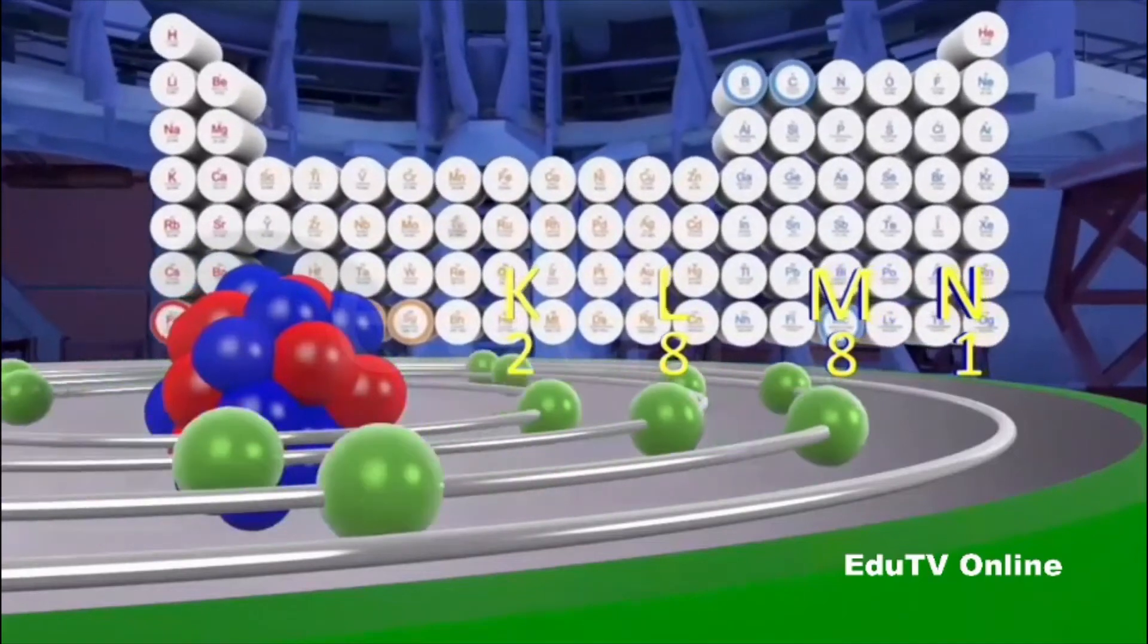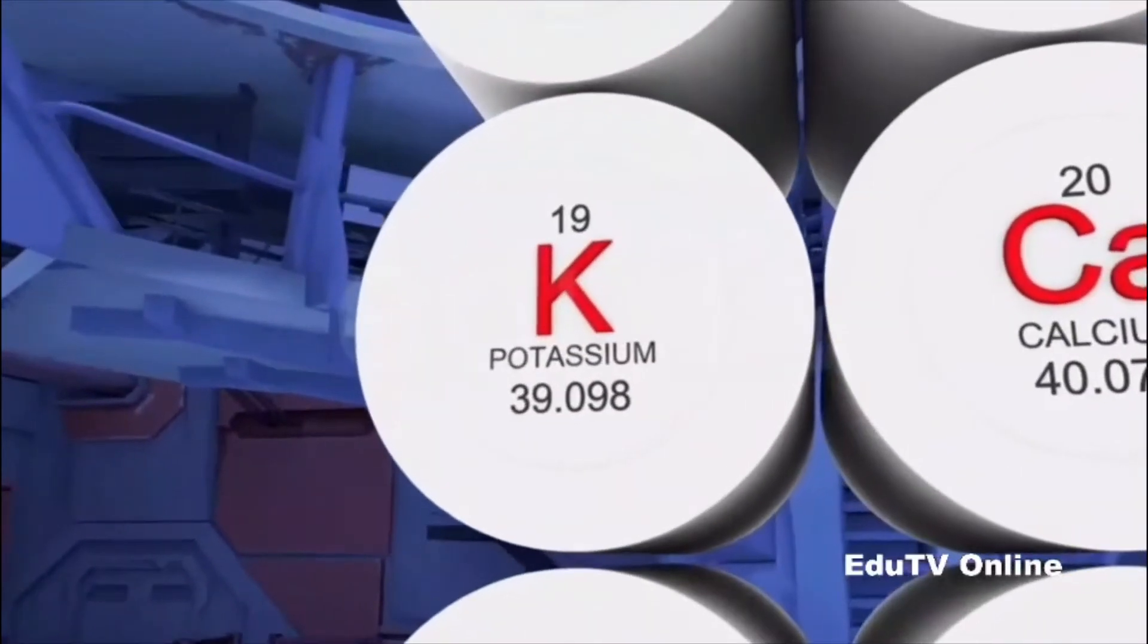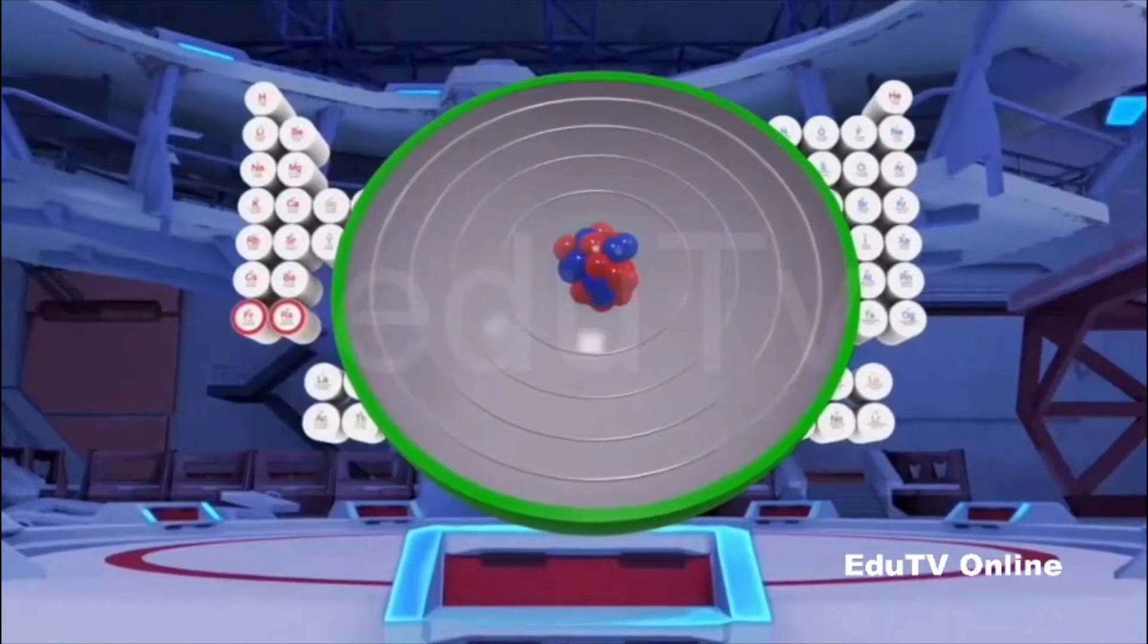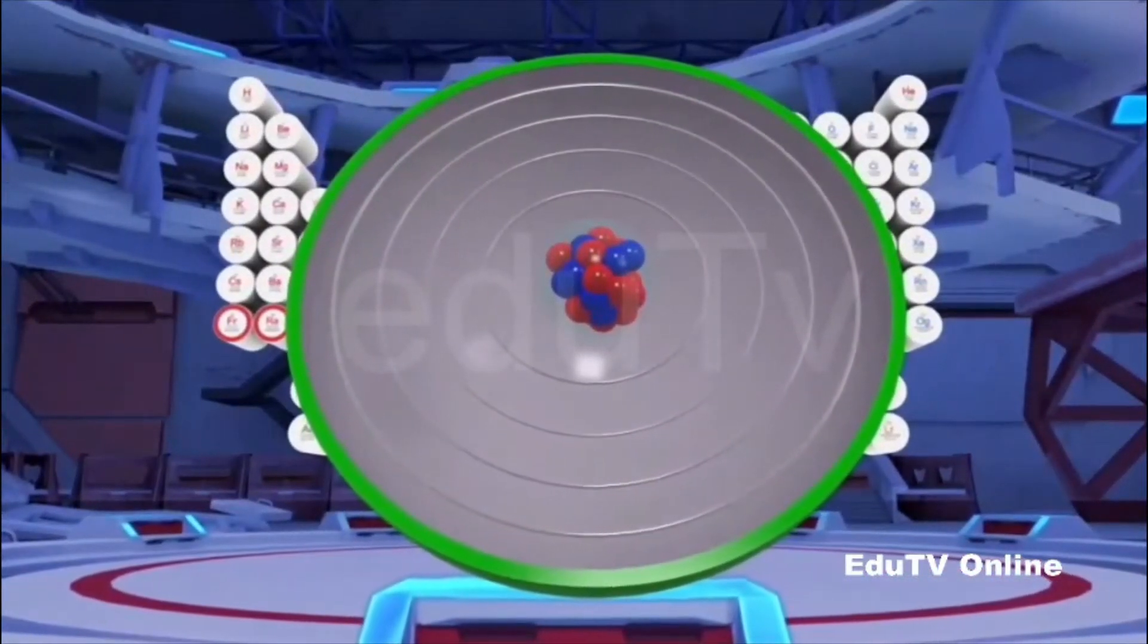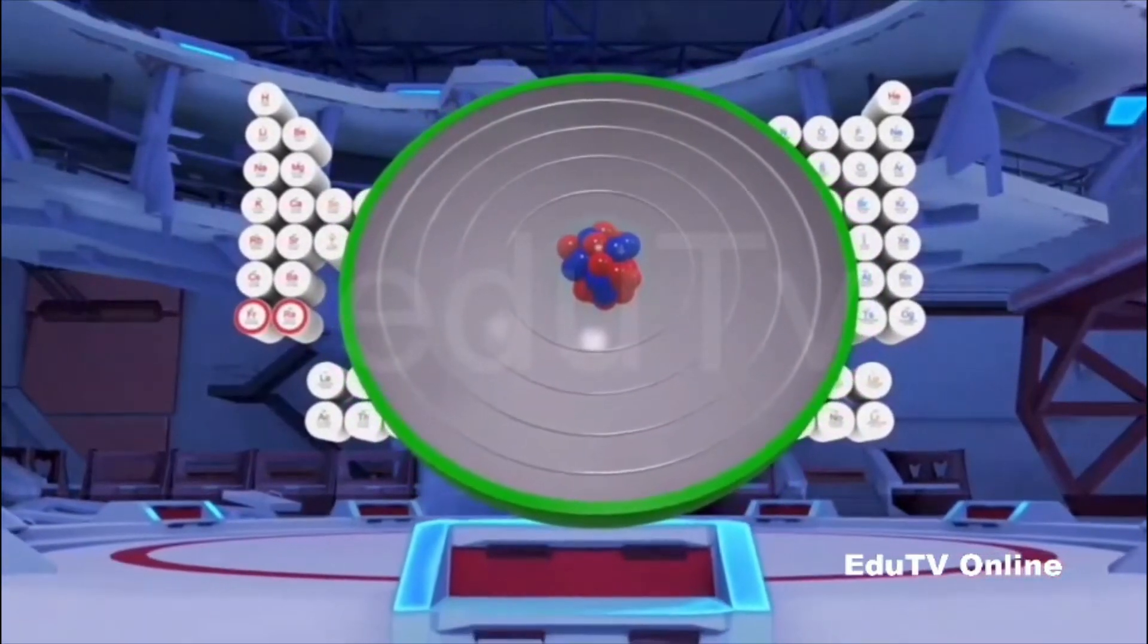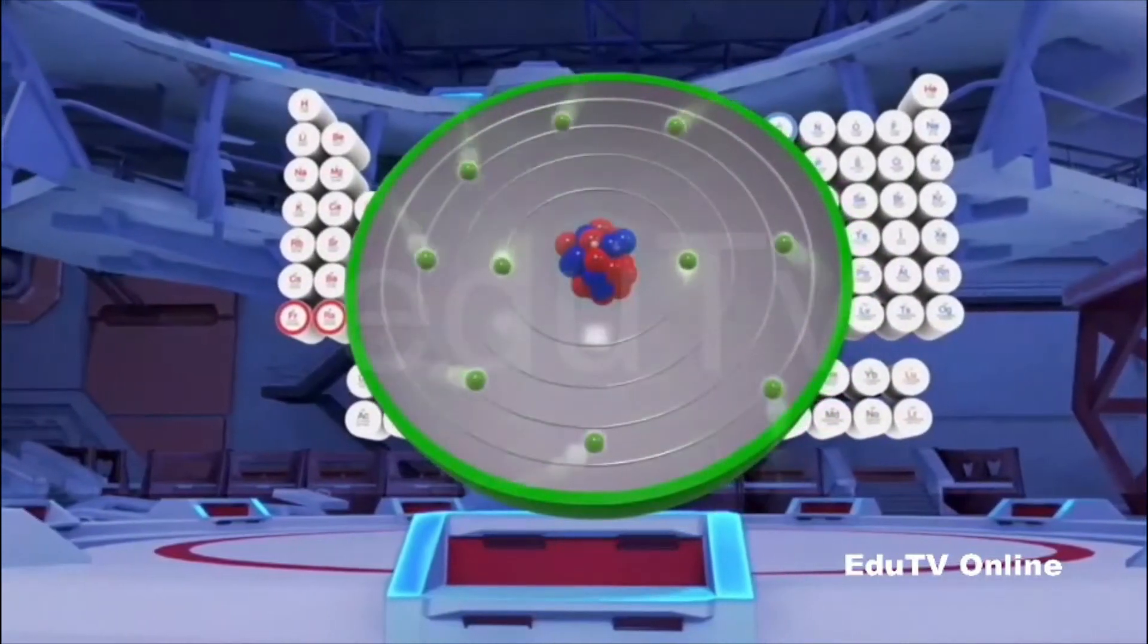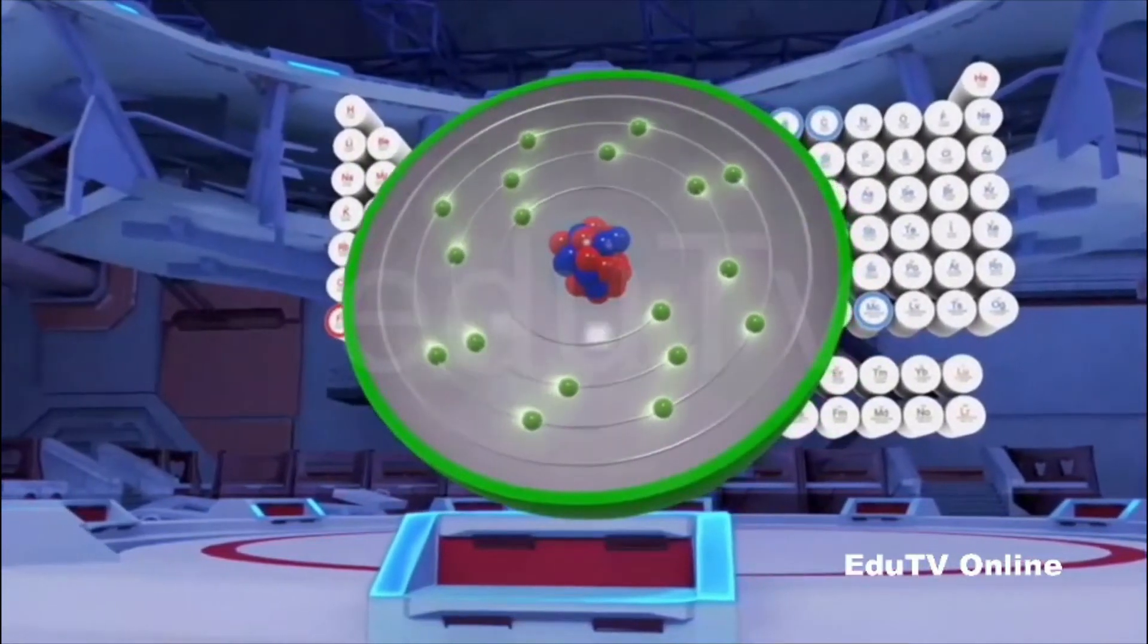For instance, consider potassium. The atomic number of potassium is 19. Therefore, there are 19 electrons revolving around its nucleus. Out of these, two electrons enter the first orbit, eight enter the second orbit, another eight of them enter the third orbit, and the remaining electron enters the fourth orbit instead of the third orbit.